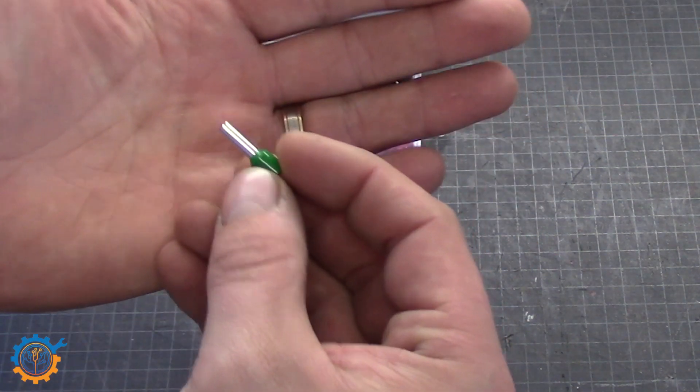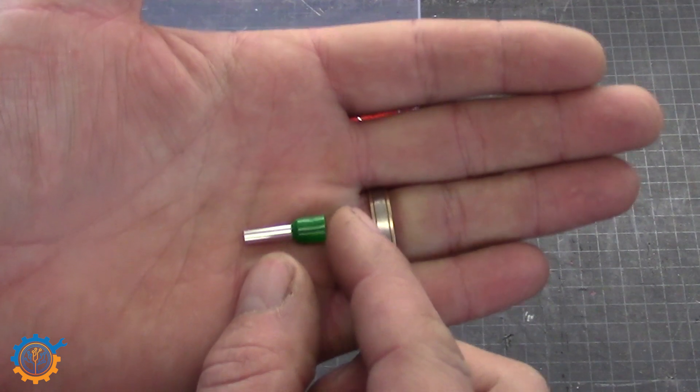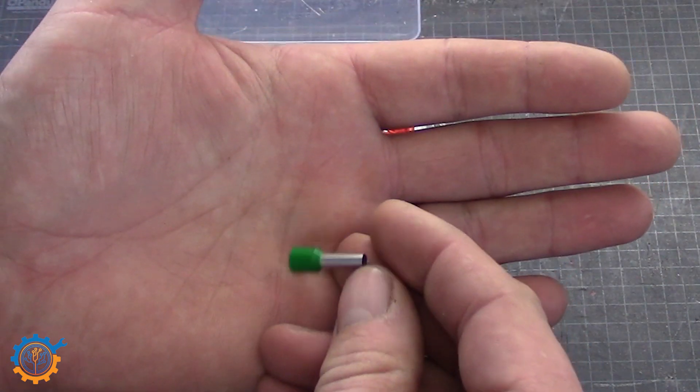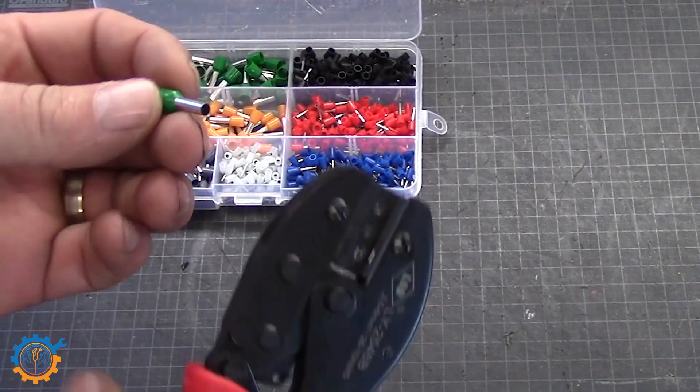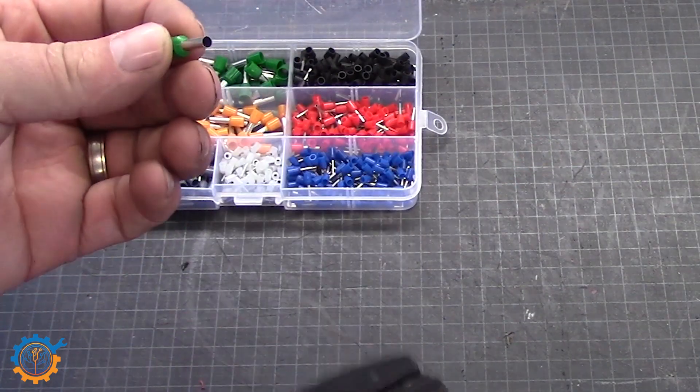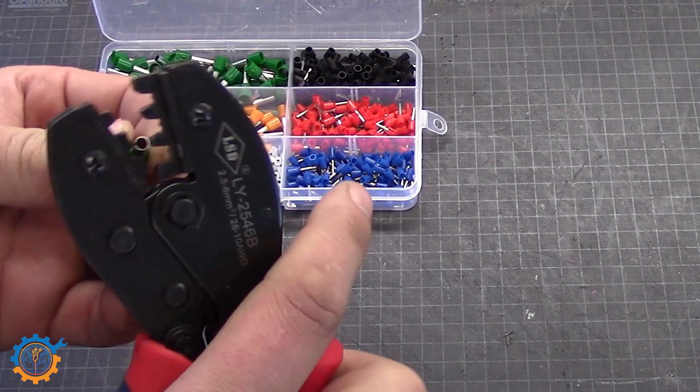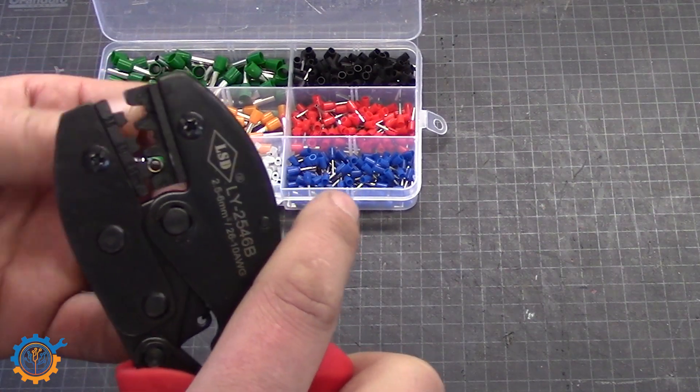The end caps that we are going to take a look at are this type here. You just take your wire and strip the end off and then push them into this here. Then you use your normal pliers like this one, depending on the size, and you clamp them. And by doing that, they will fit really snug to the wire and make a perfect end joint.